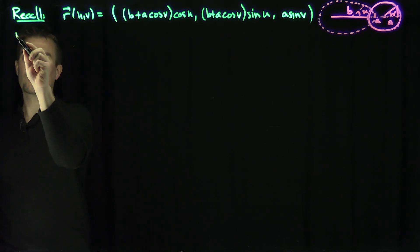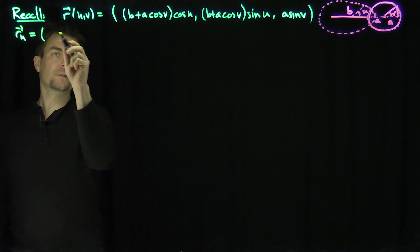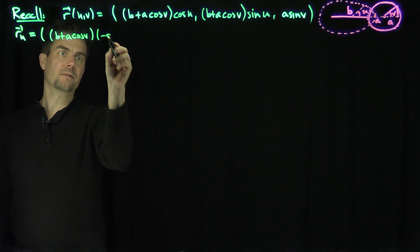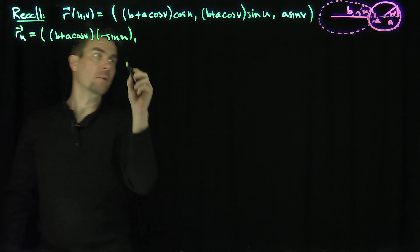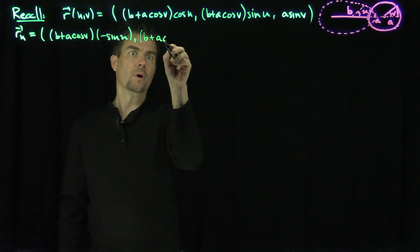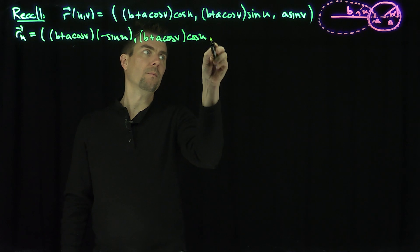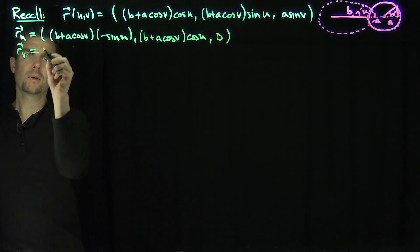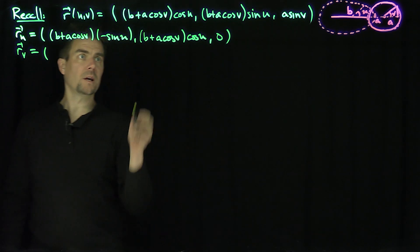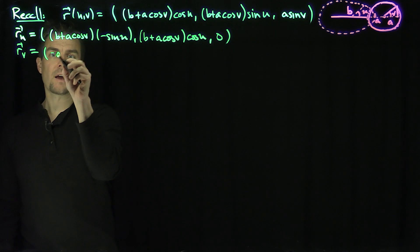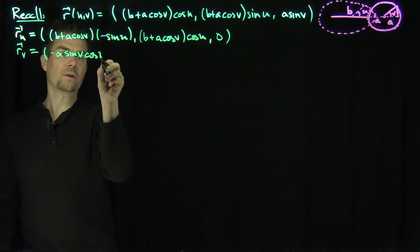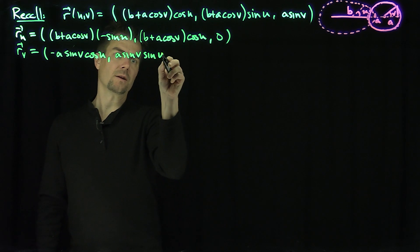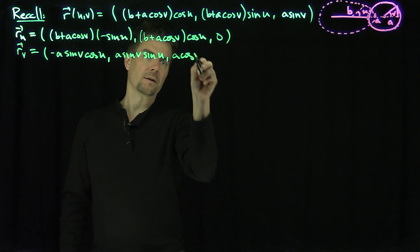So what are R_u and R_v? R_u is going to be: (b + a·cos(v))·(-sin(u)), (b + a·cos(v))·cos(u), and zero — since there's no u in the last component. And R_v is going to be: -a·sin(v)·cos(u), -a·sin(v)·sin(u), and then a·cos(v).